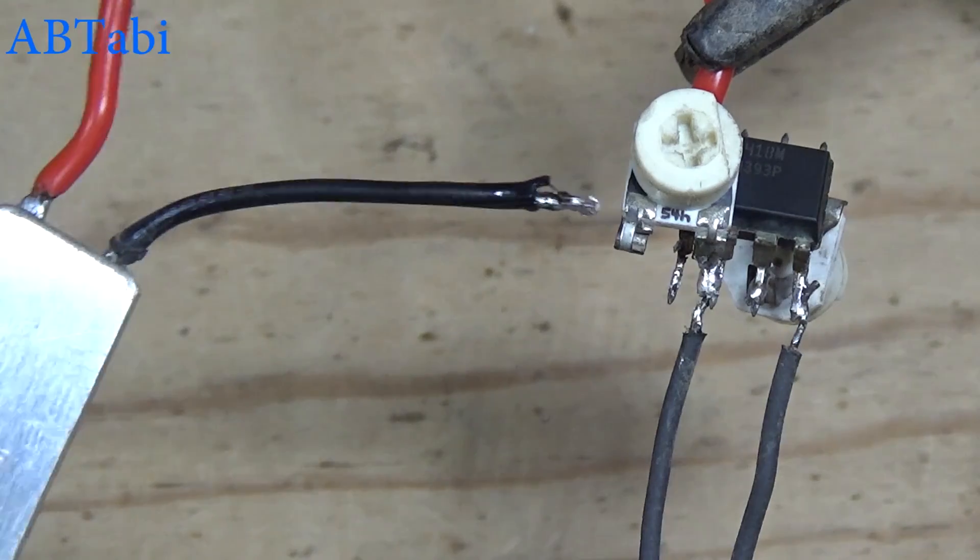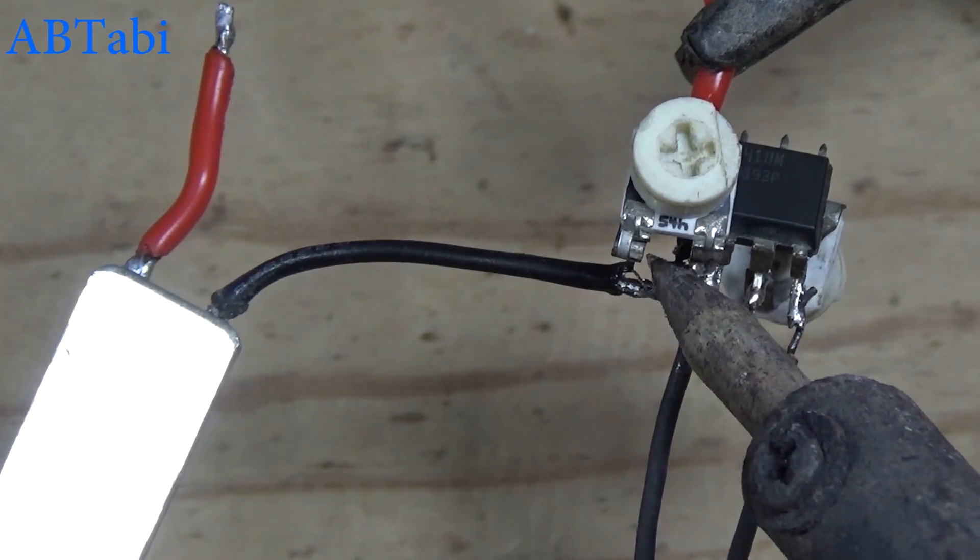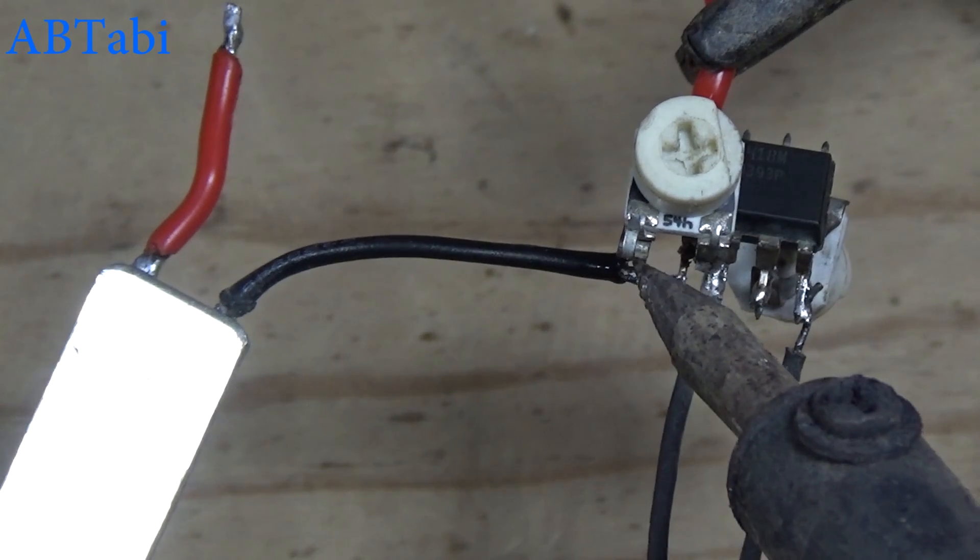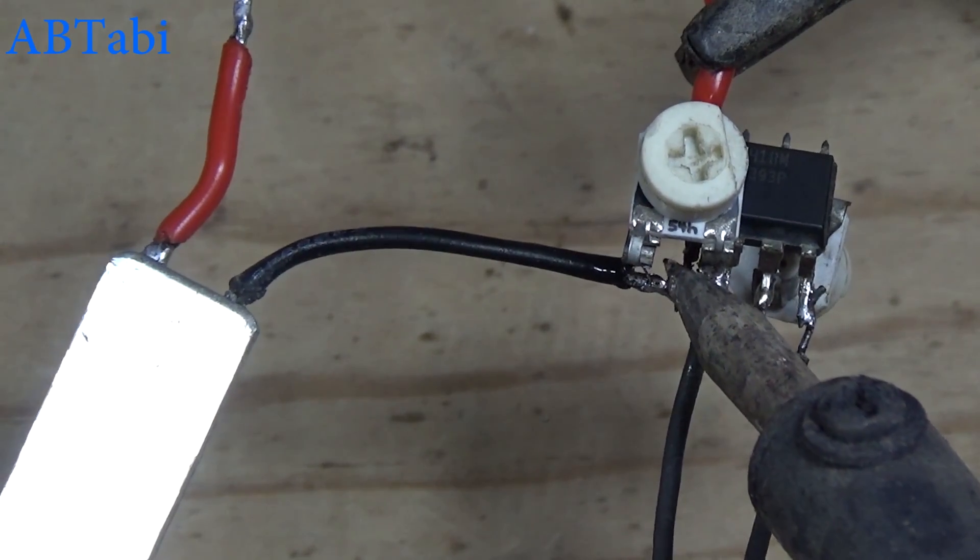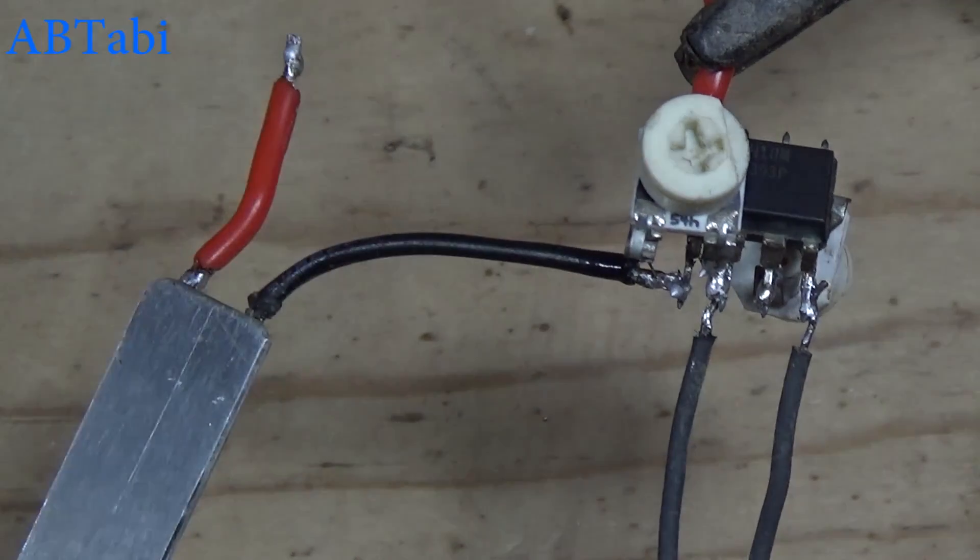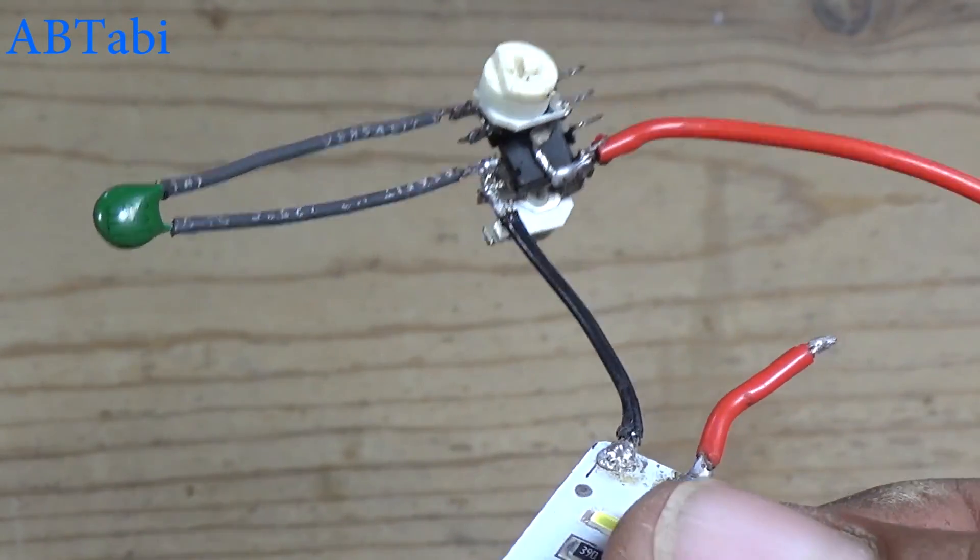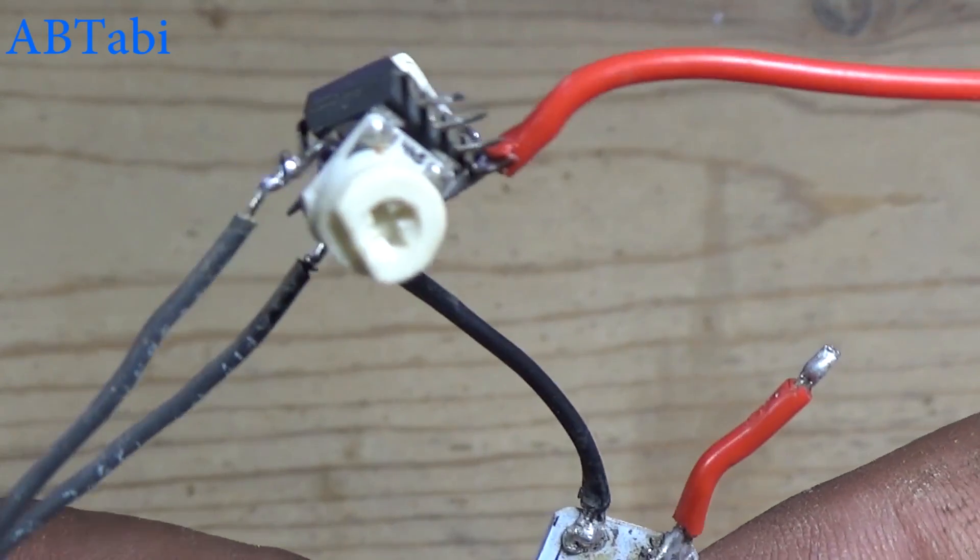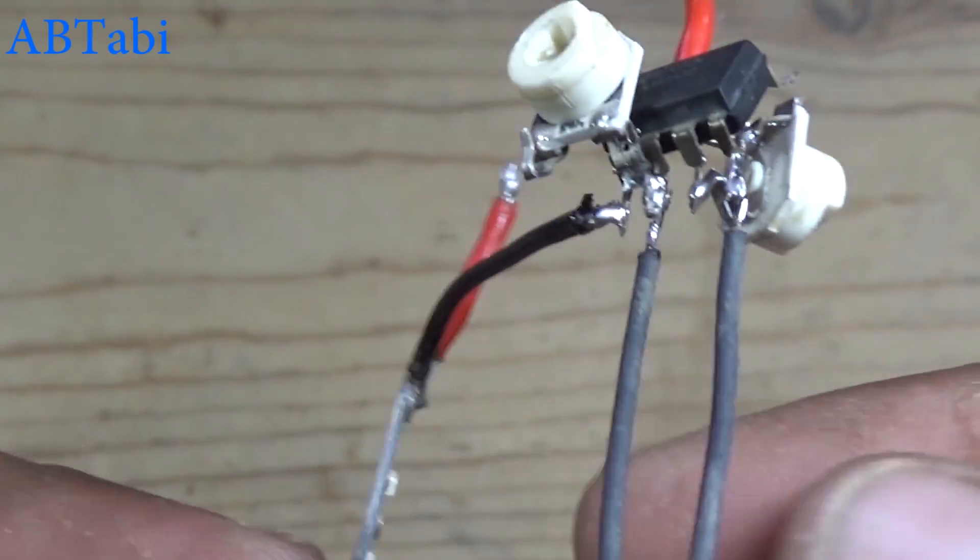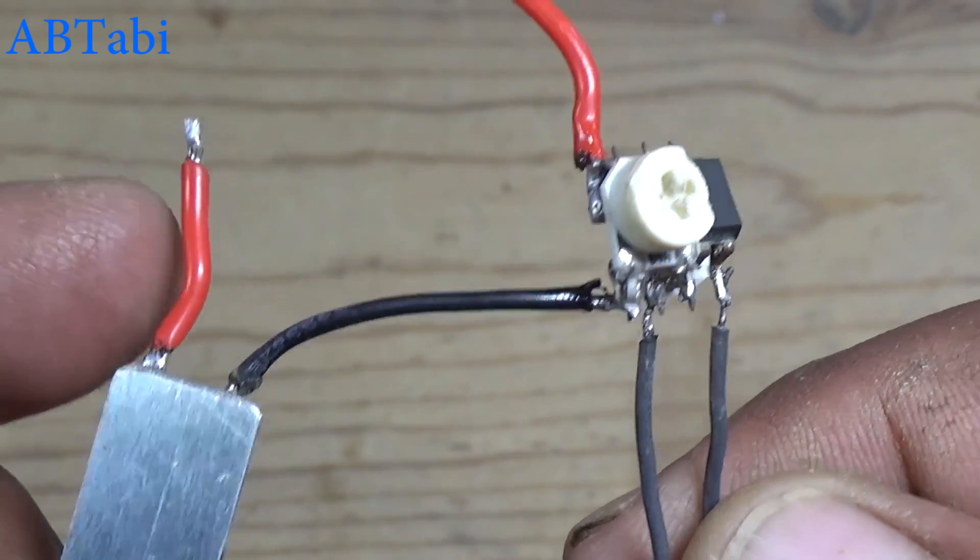I am using here LED light for testing. You can use buzzer alarm or relay to control any device. But remember, in this circuit when temperature up, the light off, and temperature got down, light will be on. If you want opposite side, it means temperature up light will on, connect LED light positive side with IC pin 1.